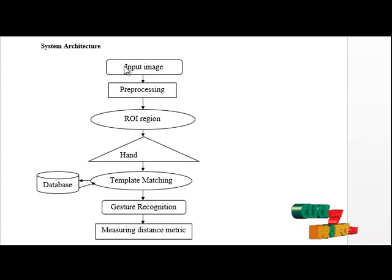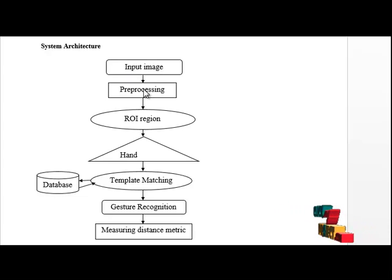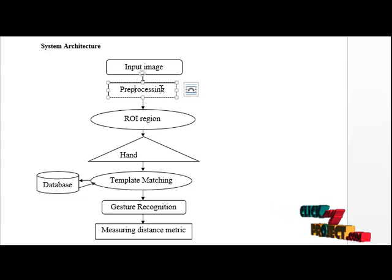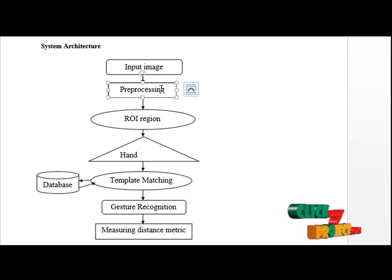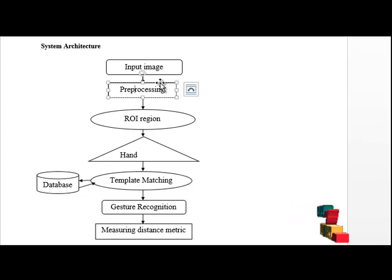First, we give the input image, which is taken from one of the images from the dataset. Next, we go to the preprocessing step. In the preprocessing step, reduction of hand noise takes place. The aim is to fix valid frames and locate the hand region from the rest of the image. This step is low time-consuming with real-time speed.